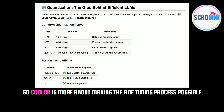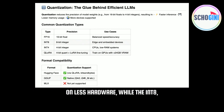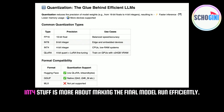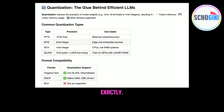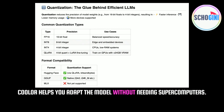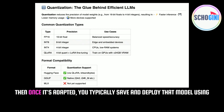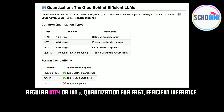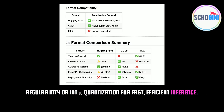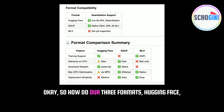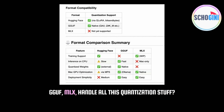QLoRA lets you take a massive model and fine-tune it using 4-bit precision, which means you can potentially do it on a single GPU with less than 24 gigs of VRAM — much more accessible than needing a huge server cluster. QLoRA is more about making the fine-tuning process possible on less hardware, while INT8/INT4 is more about making the final model run efficiently. Once adapted, you typically save and deploy using regular INT4 or INT8 quantization for fast, efficient inference.